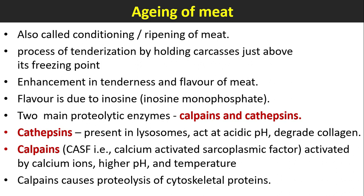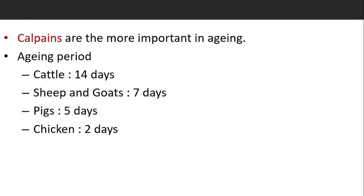Aging of meat, also called conditioning or ripening of meat, is the process of tenderization by holding carcasses just above their freezing point. It results in enhancement of tenderness and flavor of meat; flavor is due to inosine monophosphate (IMP). Two main proteolytic enzymes are important here: calpains and cathepsins. Cathepsins are present in lysosomes and act at acidic pH to degrade collagen.